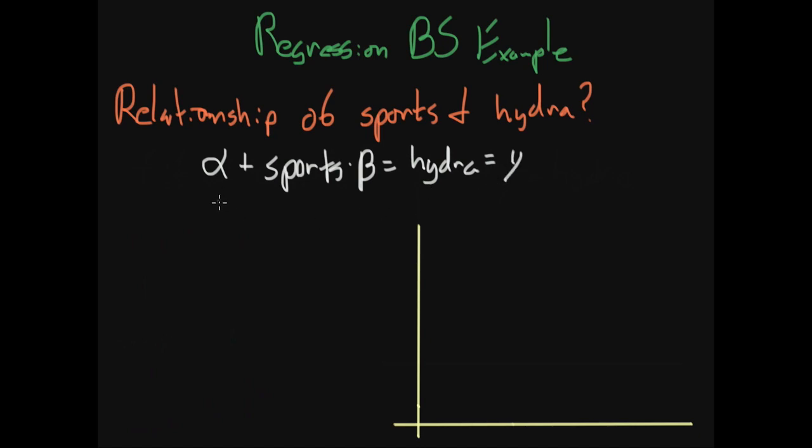The cool thing is we can view this equation almost like a function. We can view regression as a function that takes in the data and gives us back a particular beta. For example, if you had a population of individuals in high school and you applied the regression function to this entire population, you would get the true relationship of sports to hydration—the true beta.